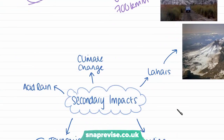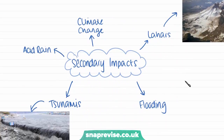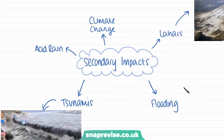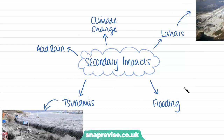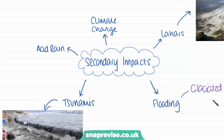Then we have our secondary impacts. Firstly, we have flooding. This can happen in areas where volcanoes are in glaciated landscapes, meaning they are near glaciers or have ice cover. Volcanoes are very, very hot, so they're going to melt all this ice and can cause flooding.